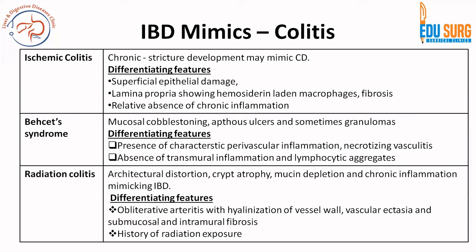Behcet's syndrome can have aphthous ulcers and sometimes granulomas, but the differentiating feature is absence of transmural inflammation and lymphocytic aggregates, with presence of perivascular inflammation — it is also known as necrotizing vasculitis, so perivascular inflammation is a characteristic feature of Behcet's syndrome. Coming to radiation colitis: there can be architectural distortion and atrophy, and chronic inflammation can also be present. However, the main feature of radiation colitis is obliterative arteritis and a history of radiation exposure. The arteritis causes hyalinization of the vessel wall and vascular ectasia, which increases submucosal and intramural fibrosis — this feature is not seen in IBD and is the differentiating feature.